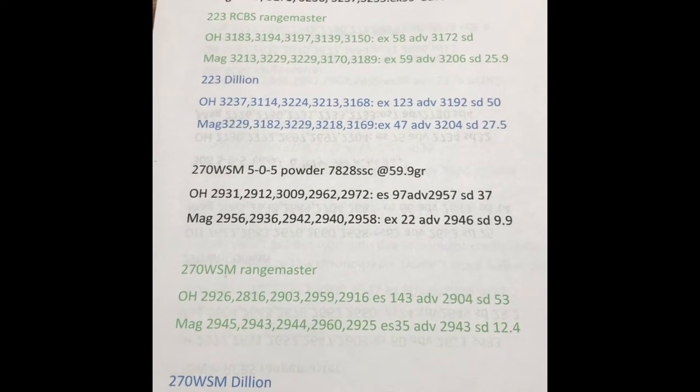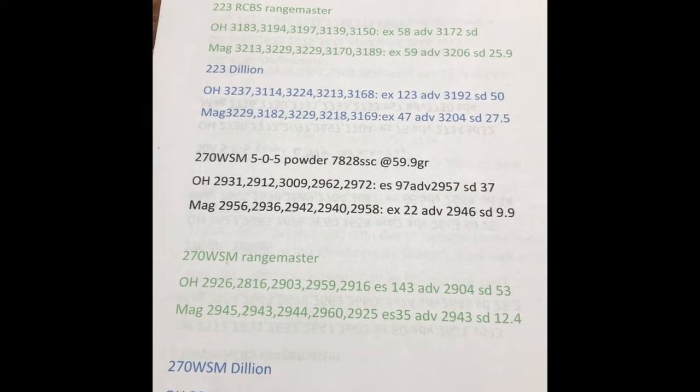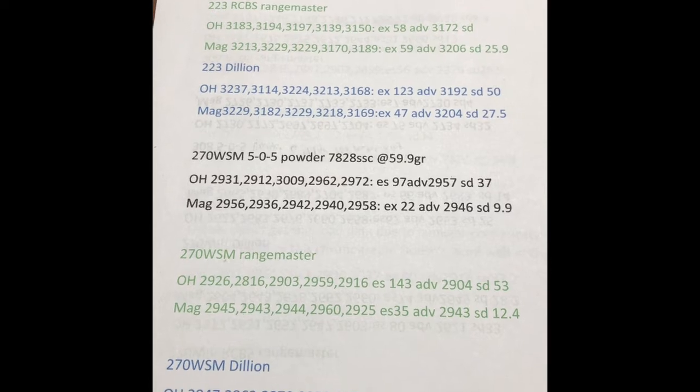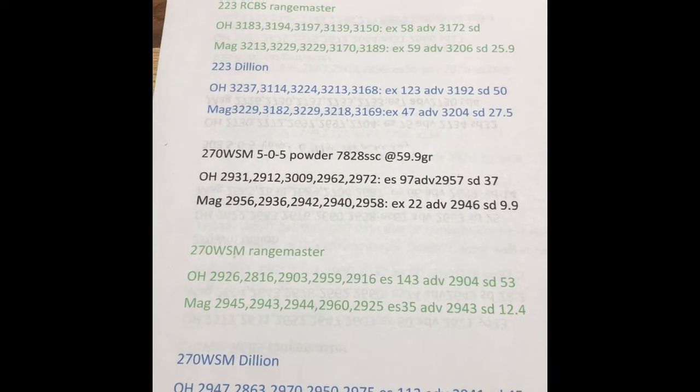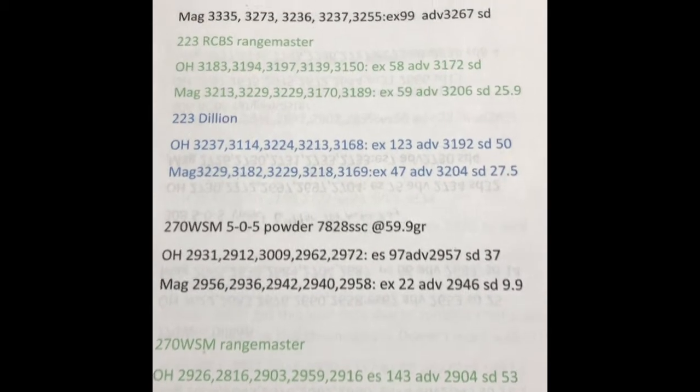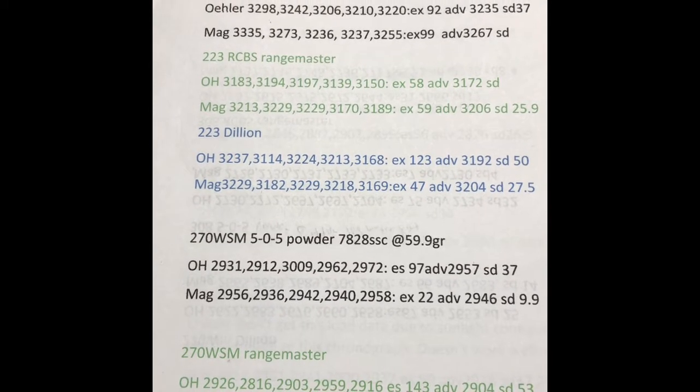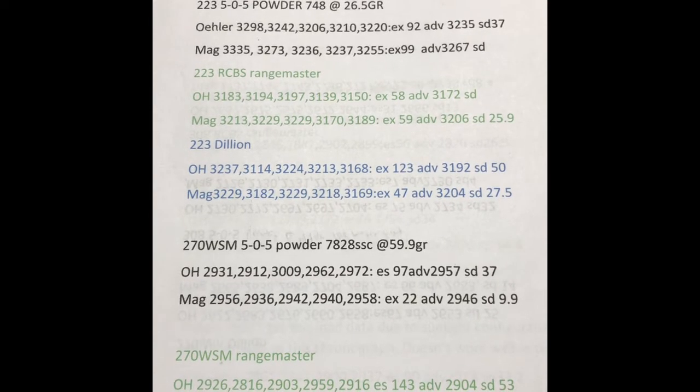Alrighty, well this is going to be the final video of the RCBS 505, the RCBS Rangemaster Digital Scale, and the Dillon Precision Scale. This is the Oehler Chronograph at the very top, and I've labeled it as OH, and the Mag is the MagnetoSpeed Chronograph.